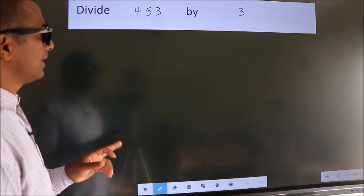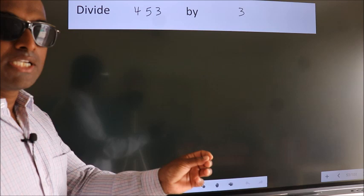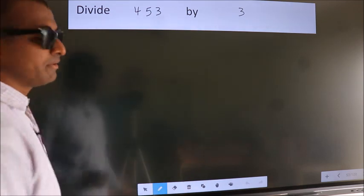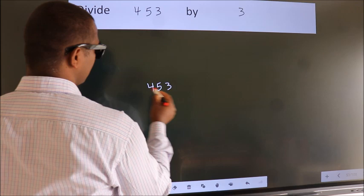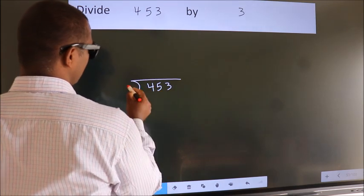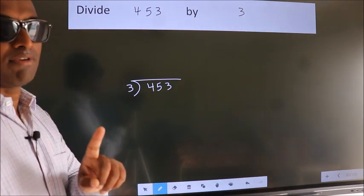Divide 453 by 3. To do this division, we should frame it in this way. 453 here, 3 here. This is your step 1.